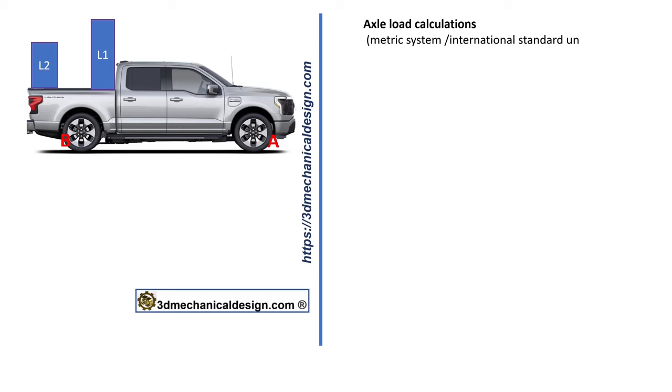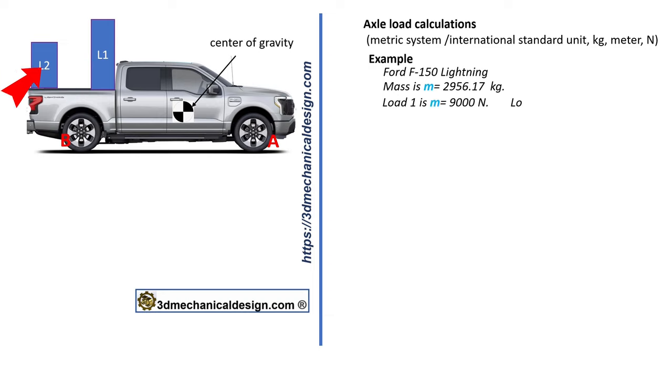Hi. Axle load calculations, metric system, international standard units: kilogram, meter, newton. Example: Ford F-150 Lightning. Mass M equals 2956.17 kilograms. Load 1 equals 9000 newtons, Load 2 equals 1000 newtons.